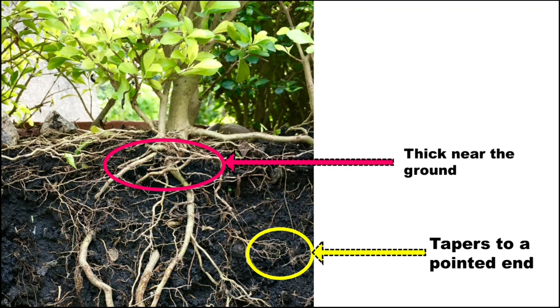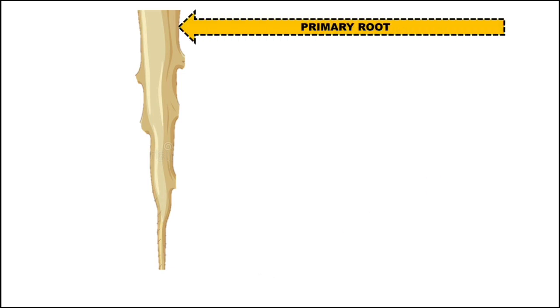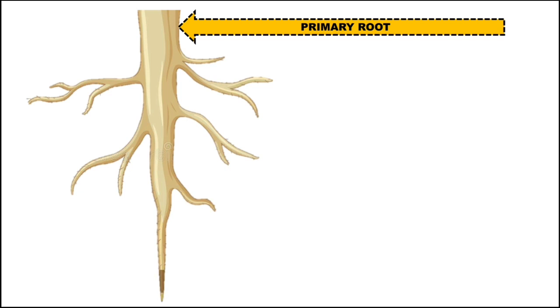There are mainly two types of root systems. Here you can see the main root, which is broad near the ground and tapered at the end. This main root is known as the primary root. In some plants, they produce secondary roots too.